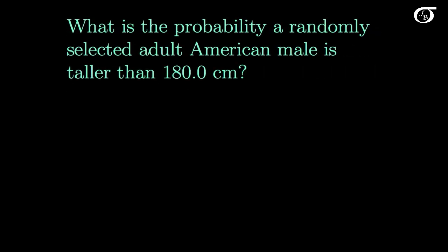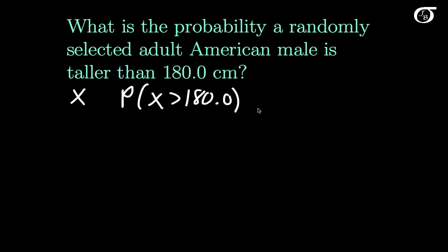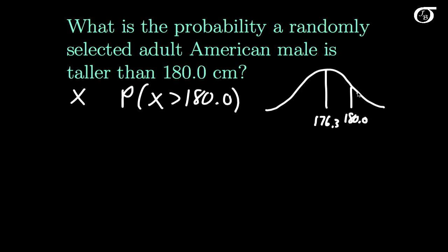For example, what is the probability a randomly selected adult American male is taller than 180.0 centimeters? Let X represent the height of a randomly selected adult American male. We want the probability that X is greater than 180.0 centimeters. Drawing out the distribution of heights with 176.3 in the middle, 180.0 is to the right, and we want the area to the right of 180.0.